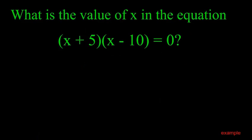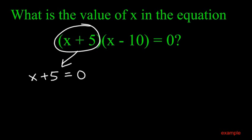Alright. Example problem. What is the value of x in the equation x plus five times the quantity x minus ten equals zero? Think about that. This is the example. x plus five equals zero. If you subtract five from both sides, that means x equals negative five.